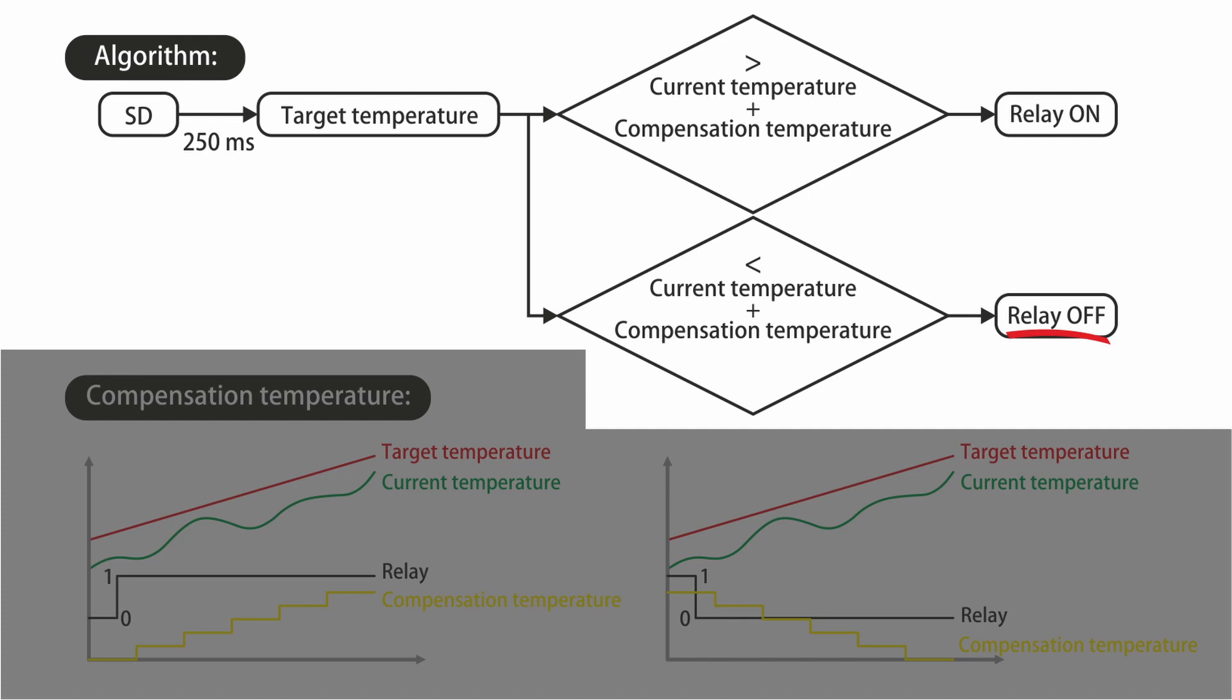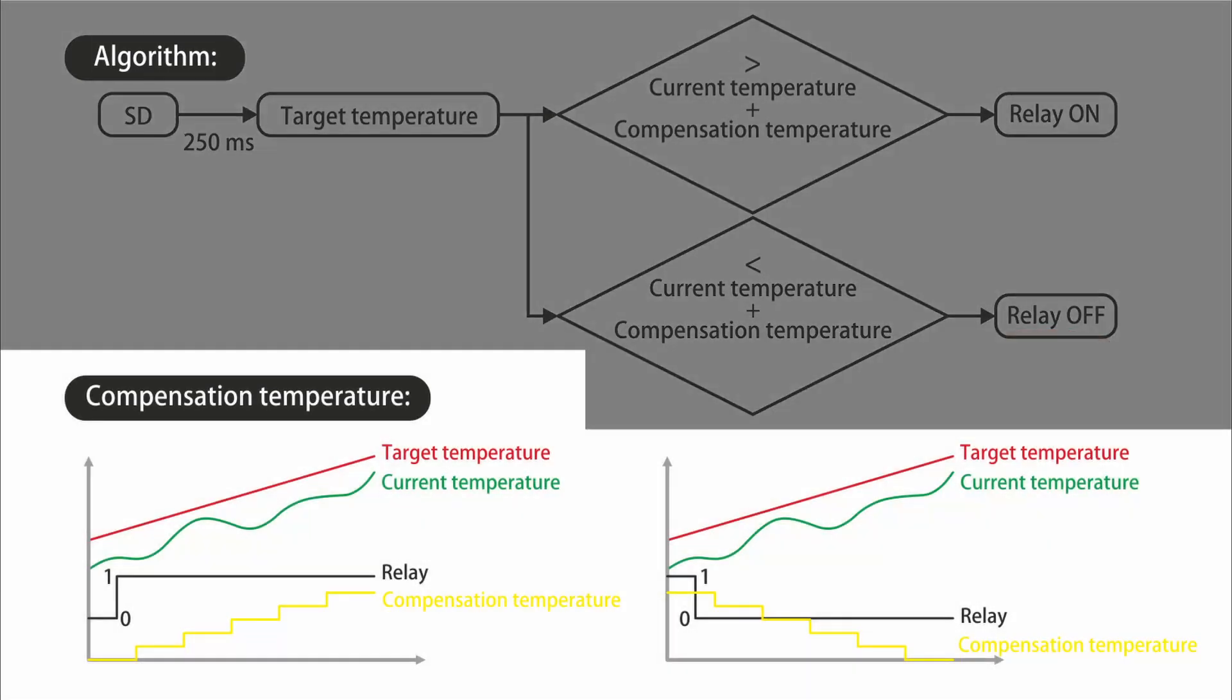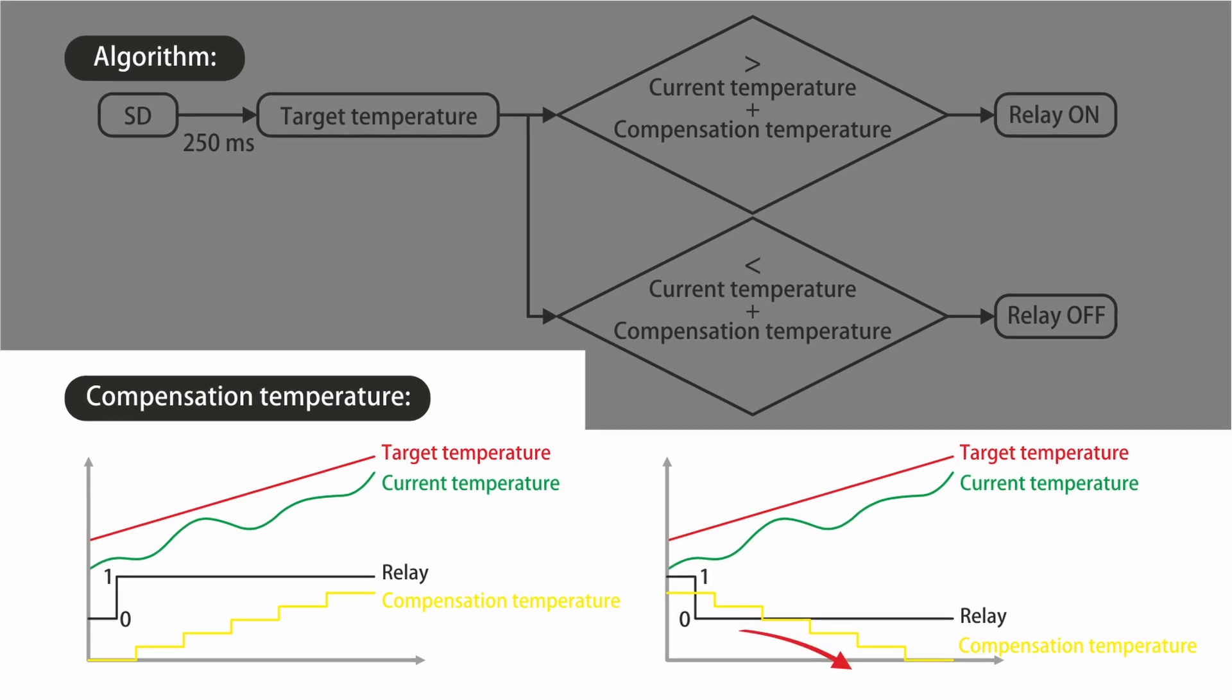Because once the relay is activated, even if we switch it off, the temperature will continue increasing for a while in many parts of the hot plate. So for instance, this compensation temperature will increase if the target temperature is higher than the current temperature and the relay is activated. Meanwhile, it will decrease if the current temperature is below the target temperature and the relay is deactivated. It seems twisted, but I'm happy with the performance.